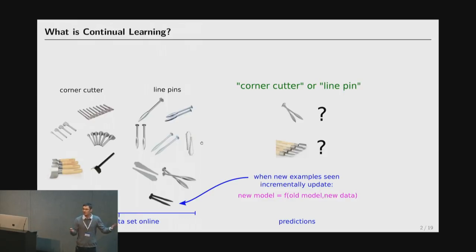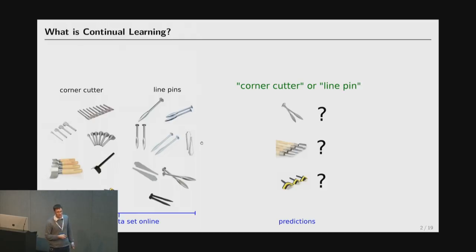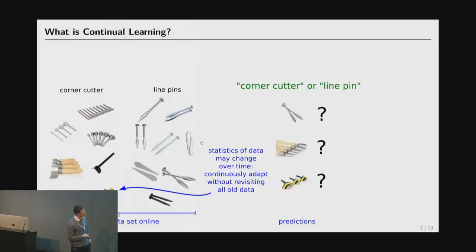But continual learning is sort of a beefed up more general version of online learning where you might have things like this happen. So imagine you start to see data points like this. This might be a corner cutter but it doesn't look like any of the corner cutters that I've seen before. And as I collect more data has occurred because the statistics of corner cutters are changing through time as more modern materials get incorporated in the manufacturer and so on and so forth. So the input distribution here might be changing over time. This is related to covariate shifts. And again we'd like to be able to encompass that change in input statistics naturally in a continual learning or an online way.